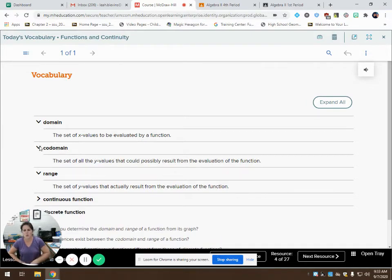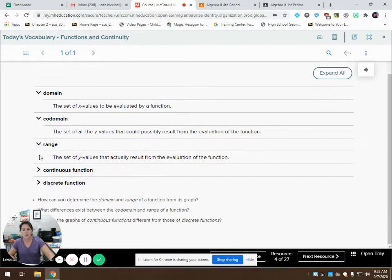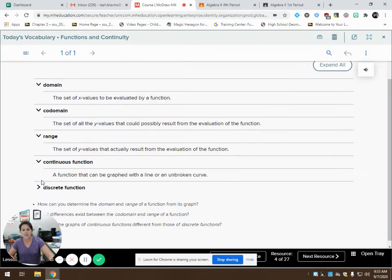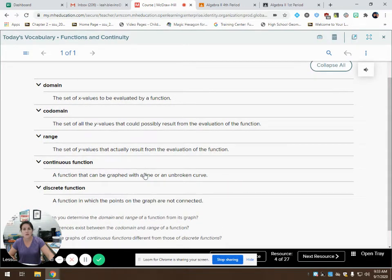So what is codomain? This is probably maybe the first time you've ever heard of codomain. The codomain is the set of all the y values that could possibly result from the evaluation of the function. Once again, I would take a moment to pause this video. And I would write down these definitions in my notebook so that I have them. Because on your chapter test, there will be a section on vocabularies. So I would make sure that I write these down, maybe make some flashcards, start studying them now so you really understand them and have them memorized.